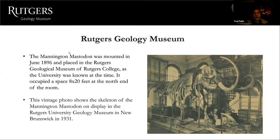The Mannington Mastodon was mounted in 1896 at Rutgers College, as the university was known at the time. It occupied a space of 8 by 20 feet at the north end of the room. A vintage photo shows the skeleton on display at the Rutgers Geology Museum in New Brunswick in 1931.